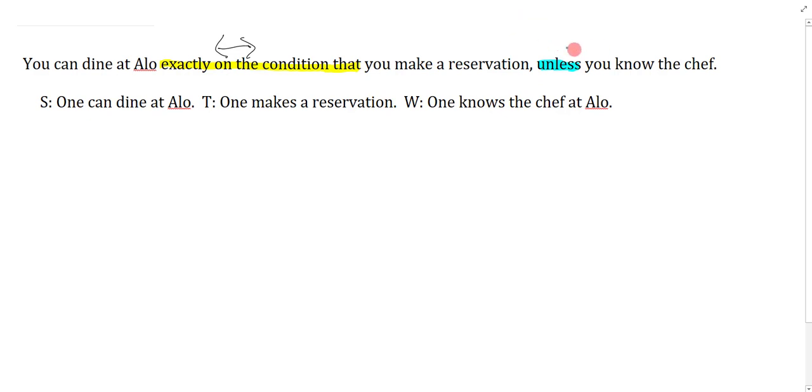We have this comma which is going to tell us something about the division. Unless is a two-part connective, so we need a left part and right part, but the comma is telling us that the biconditional stops at the comma.